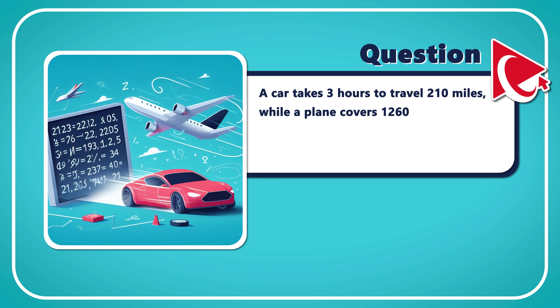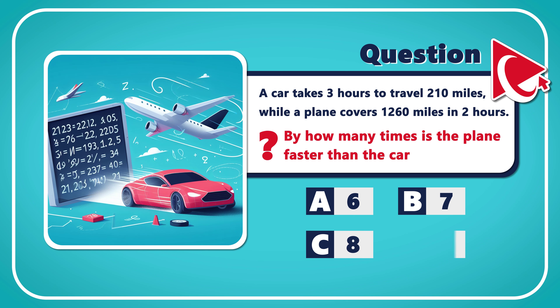You have four choices: choice A is six times, choice B is seven times, choice C is eight times, and last but not least, choice D is nine times.